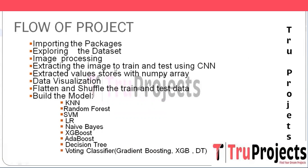The third step is image processing — pre-processing of medical images is crucial to enhance quality and reduce noise. Common techniques employed include image resizing, normalization, and filtering. The next step is extracting images to train and test using the CNN. The dataset is divided into training and testing subsets; the training set is used to teach the CNN model to recognize patterns and features associated with brain tumors.